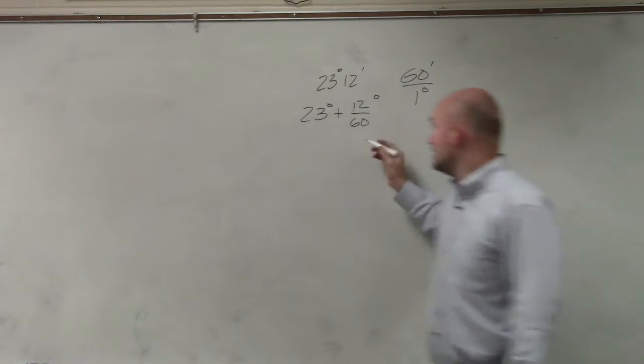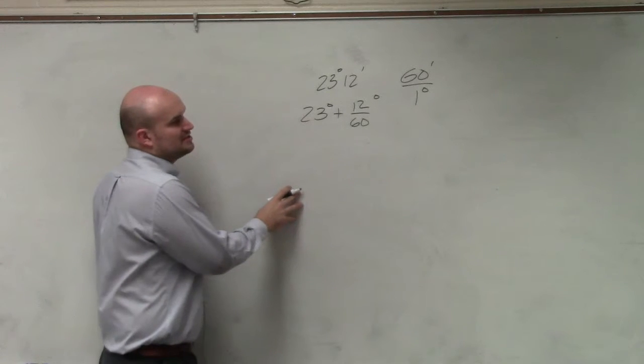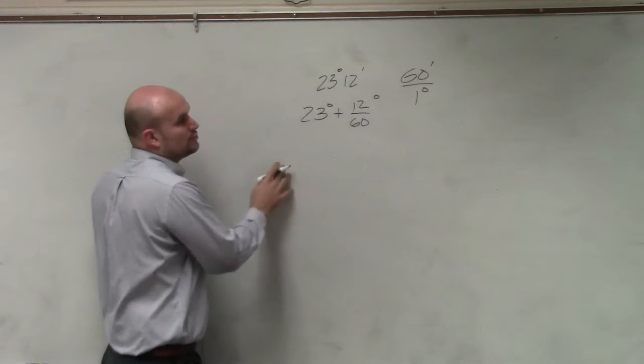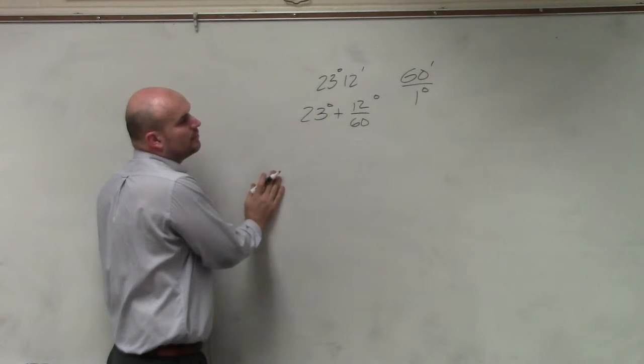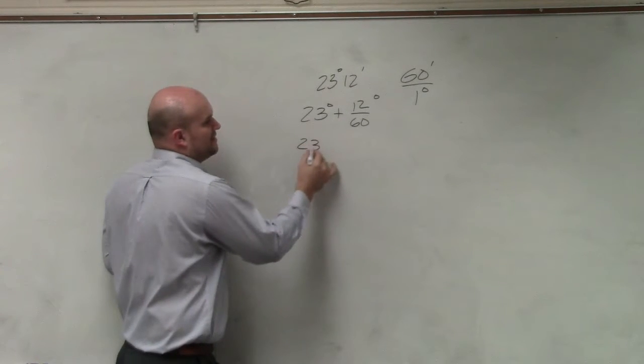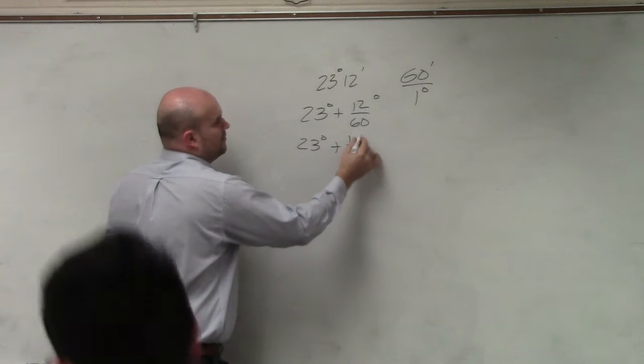Well, we can reduce that. We could say 6 goes into 12 two times, 6 goes into 60. Or we could just say 12 goes into 12 one time, and 12 goes into 60 five times. So it's 23 degrees plus one-fifth degree.